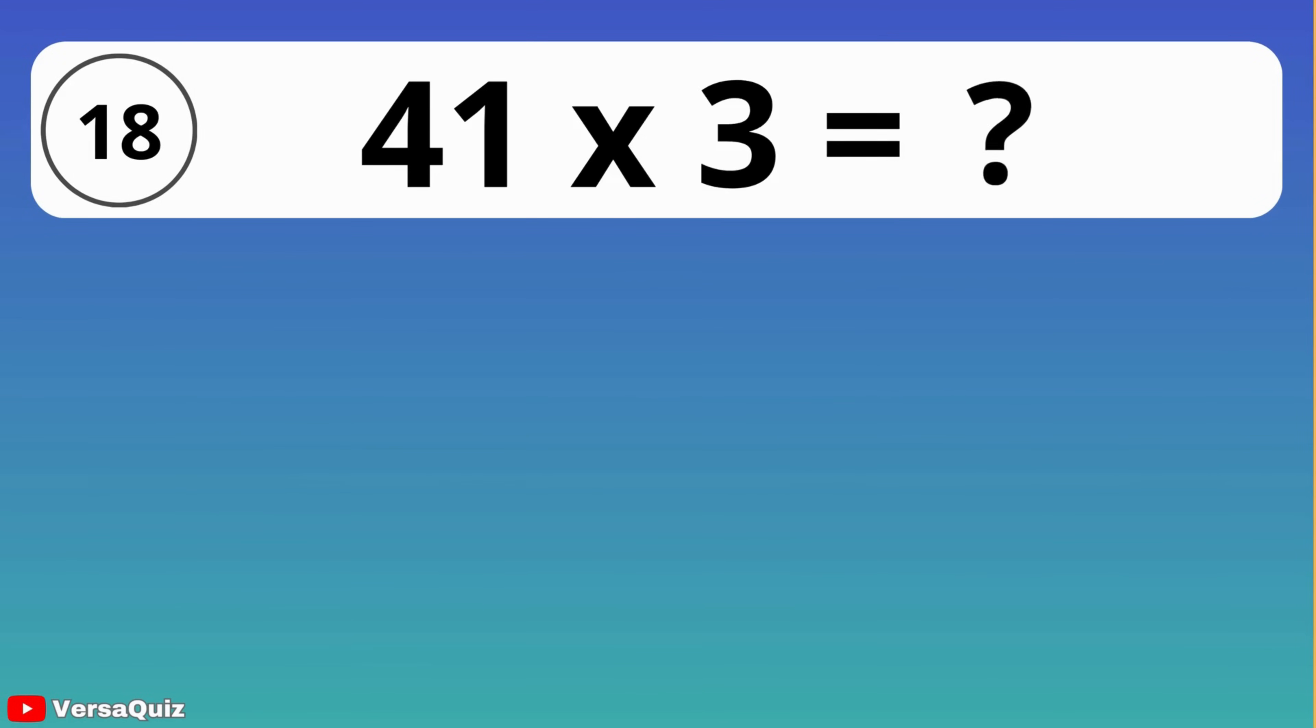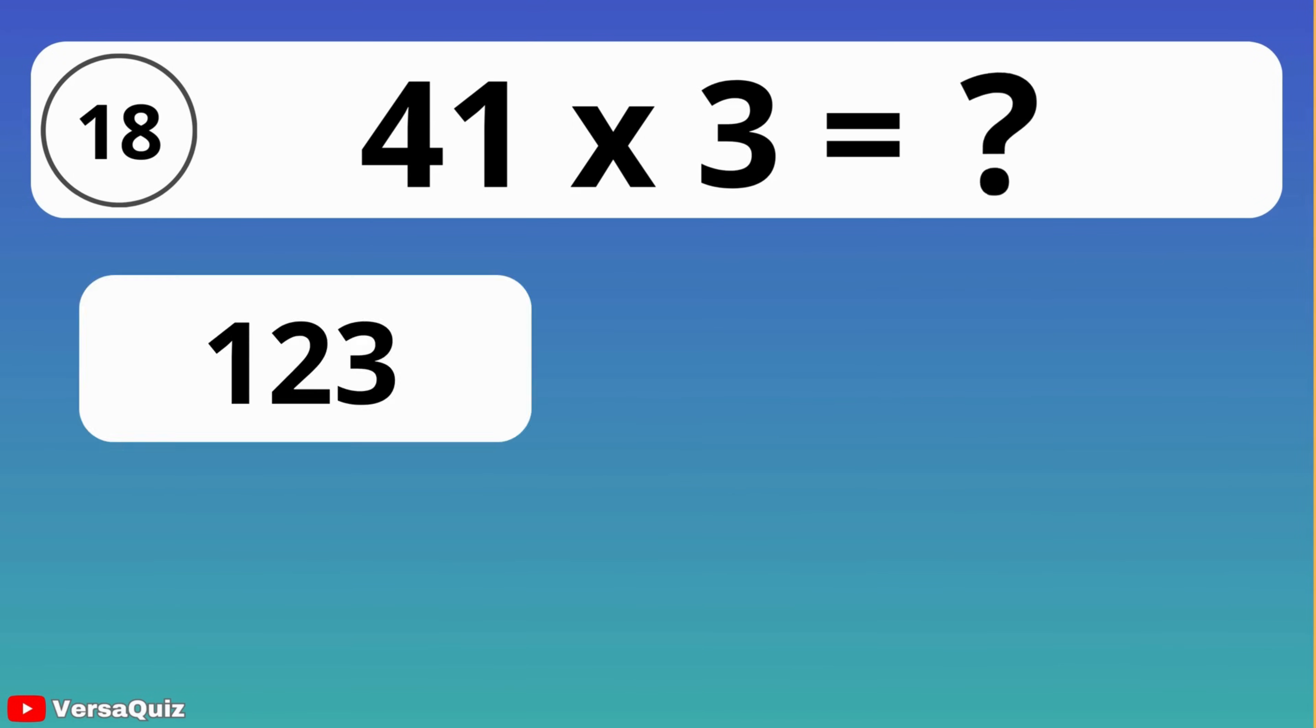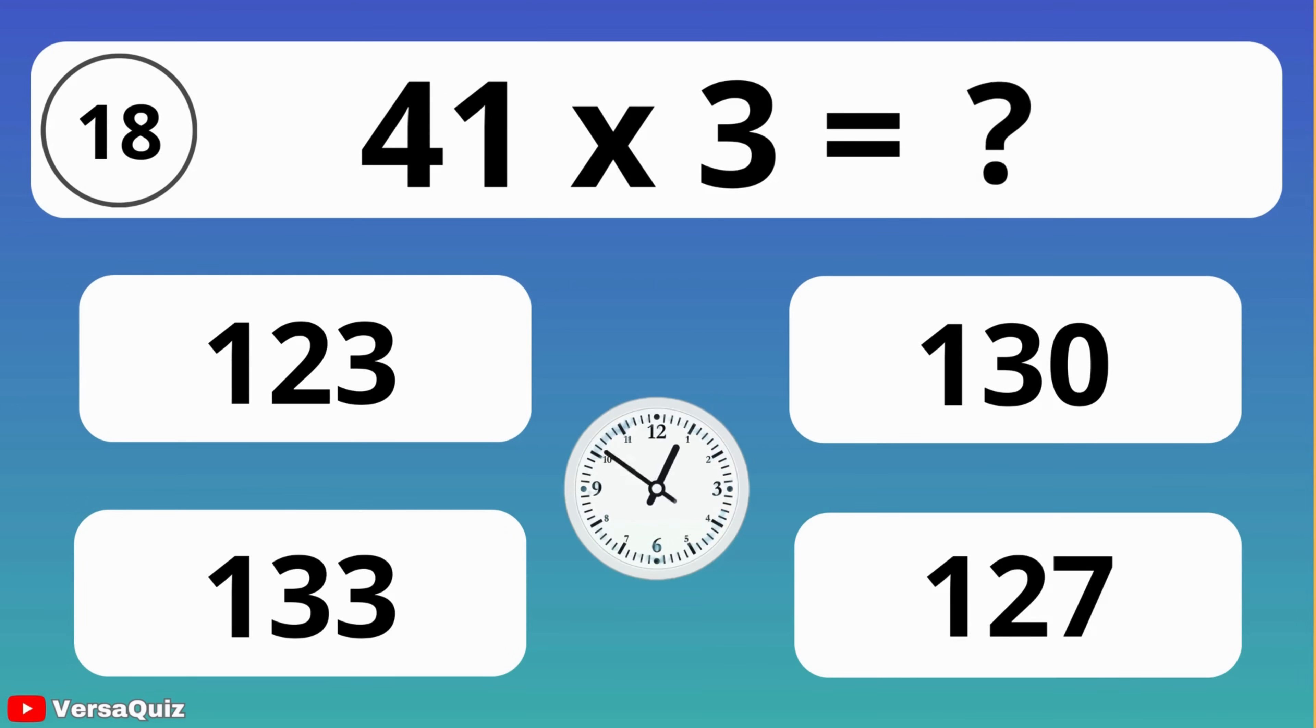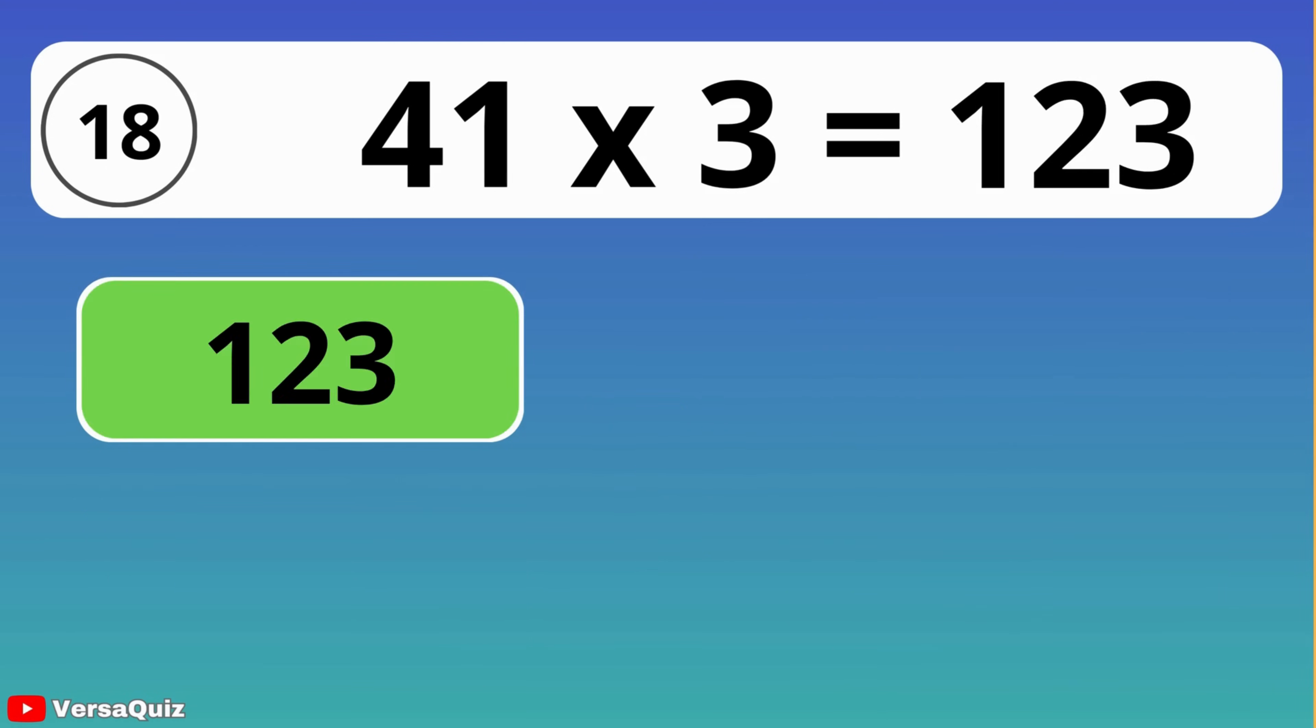What is 41 times 3? 123, 130, 133, or 127? When you multiply 41 by 3, the result is 123.